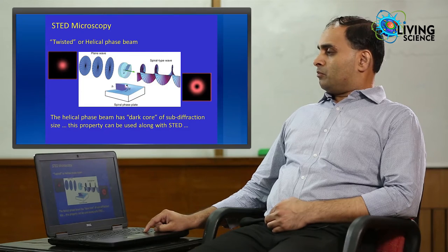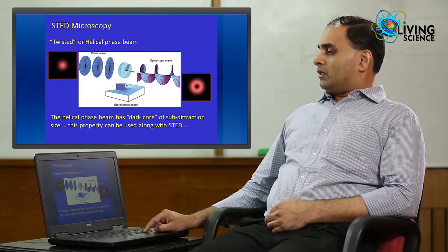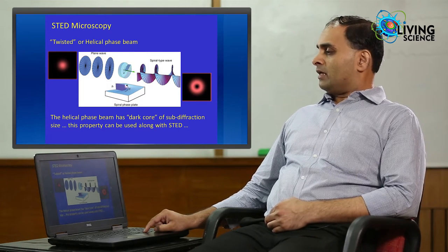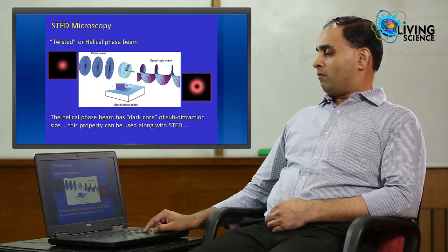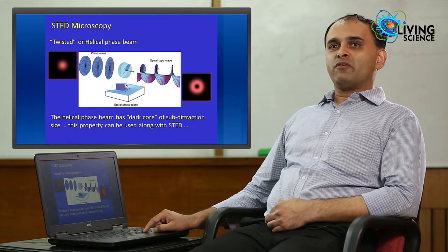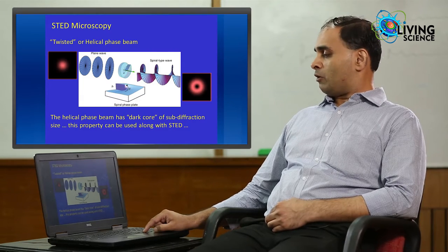To achieve this particular feature, the beam that is used is actually a twisted or helical phase beam which is known to have a dark core which is sub diffraction size or about 100 nanometer size.